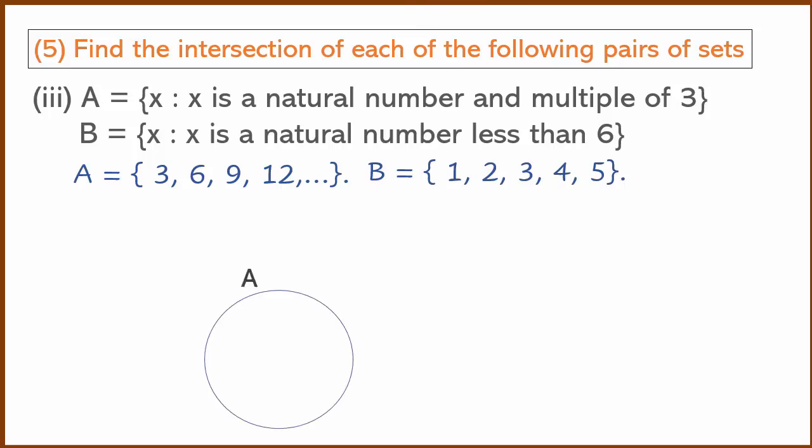Drawing the Venn diagram for A and B. A's first element is 3, which is also in B's common area. B's elements are 1, 2, 3, 4, 5. The element 3 is in the common area. So the intersection is {3}.